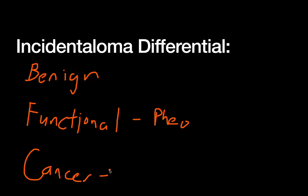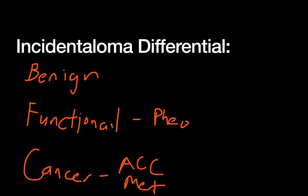Finally, you have cancers of the adrenal gland. There are really two main types. There's ACC or adrenocortical carcinoma — this is a very bad cancer and patients do not do very well. The other option is metastatic disease from somewhere else, like we talked about before. Keep these in mind — we'll go into a bit more detail about how to diagnose and treat these, but that's the differential you should have in your head when you think about an adrenal mass.